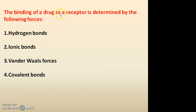The binding of a drug to a receptor is determined by the following forces: hydrogen bond, ionic bond, van der Waals forces, and covalent bond. Among these four bonds, the ionic bond is the strongest.